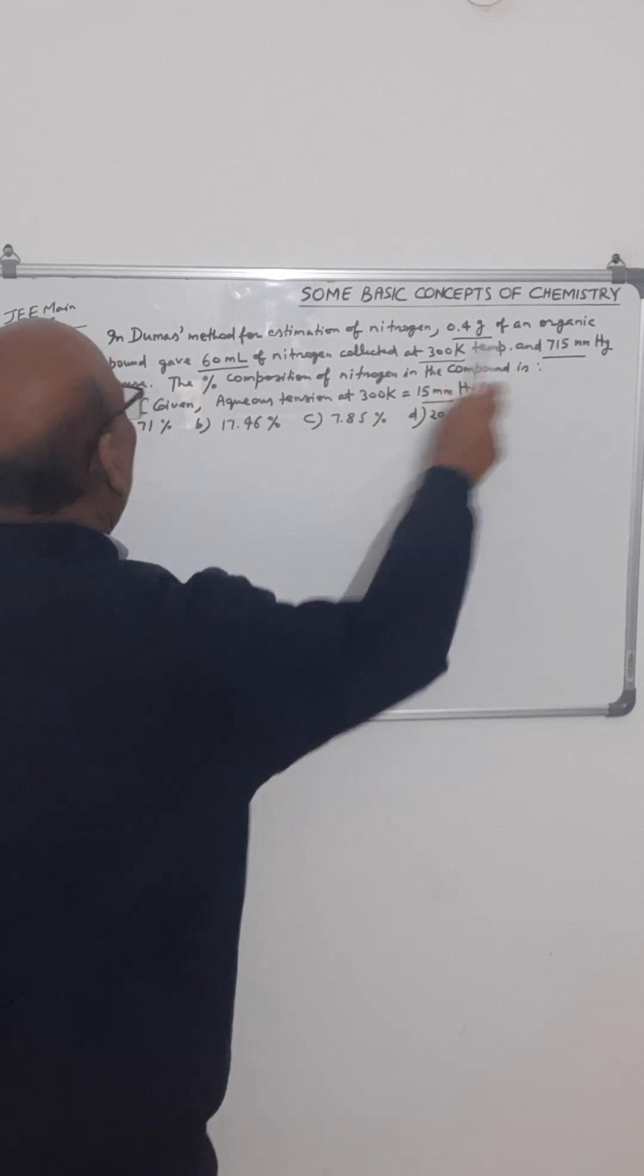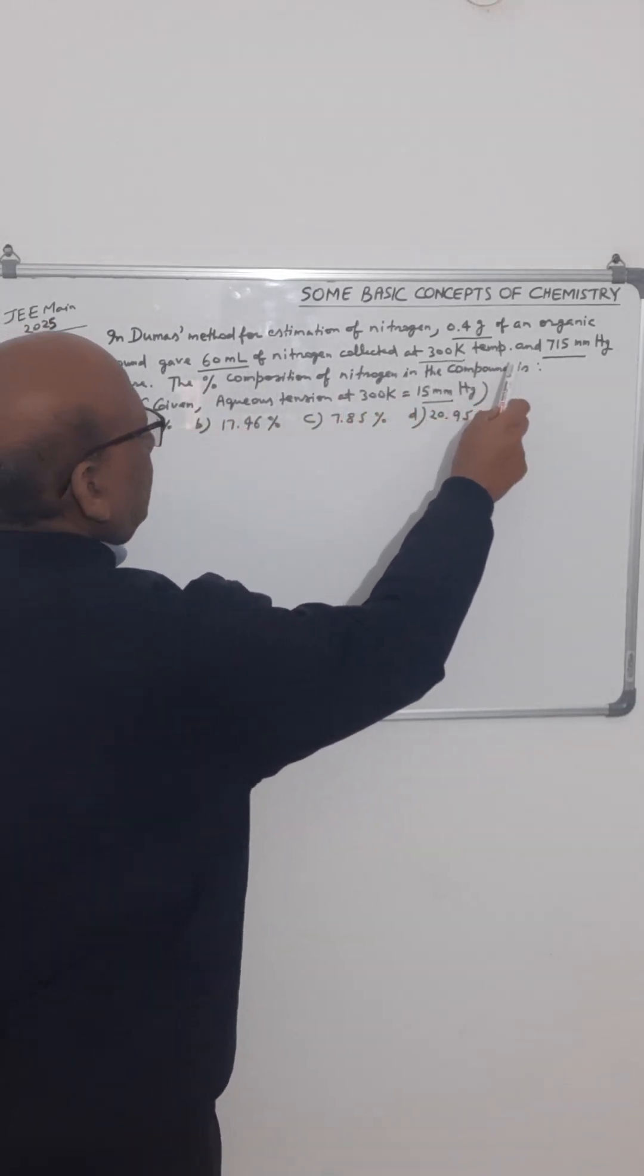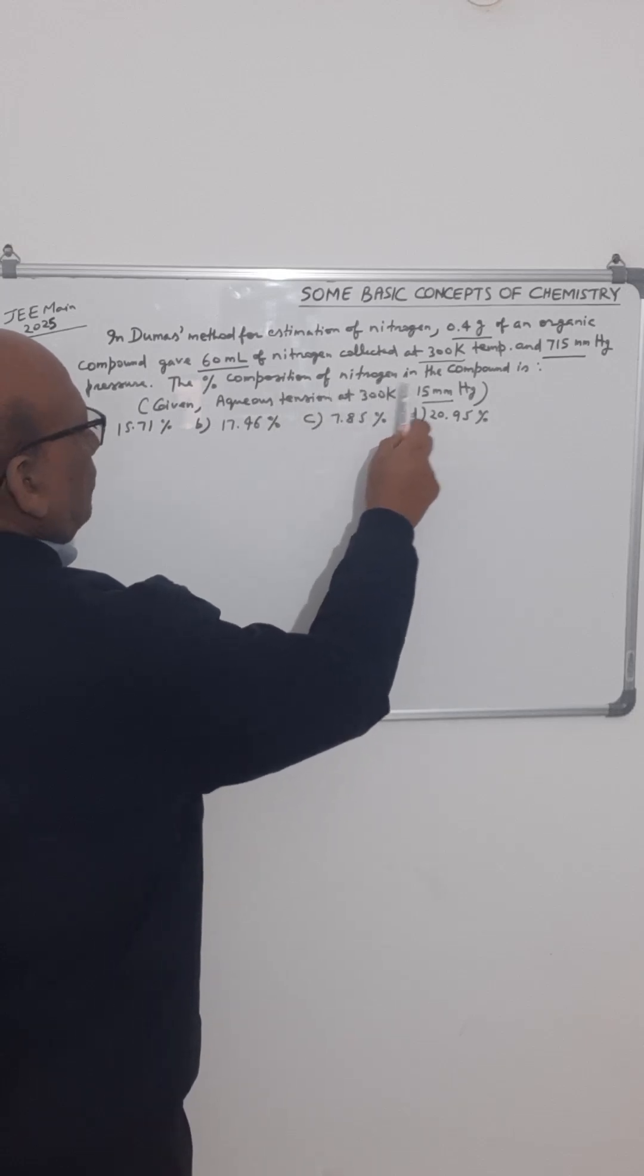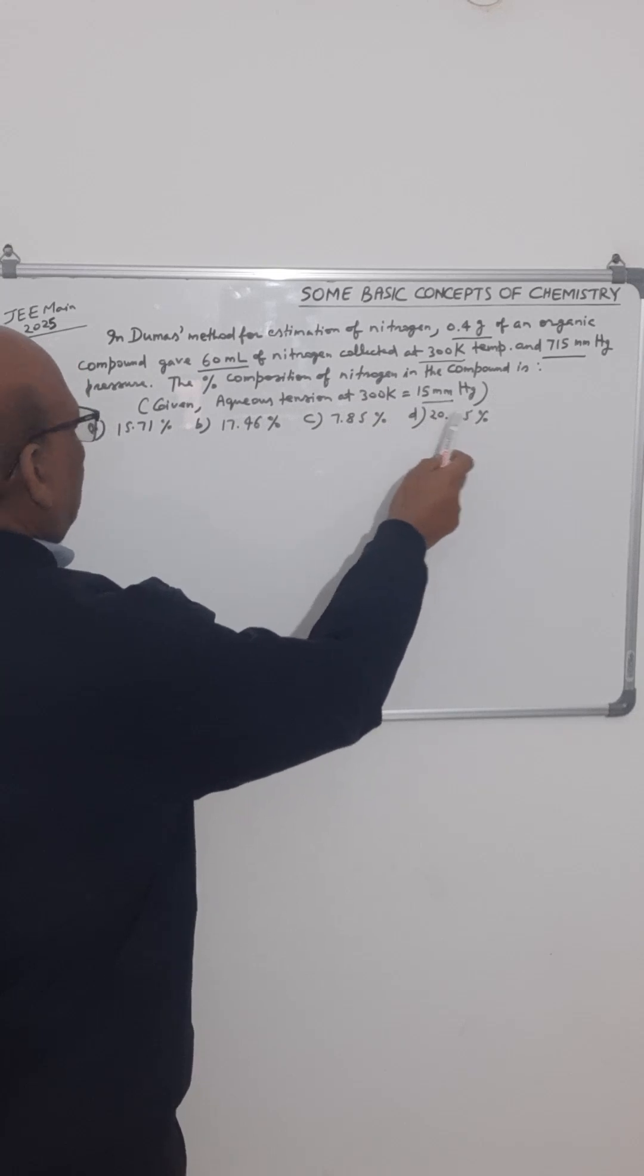0.4 gram of an organic compound gave 60 ml of nitrogen collected at 300 Kelvin temperature and 715 mm Hg pressure. The percentage composition of nitrogen in the compound is to be found. The aqueous tension at 300 Kelvin is given to us.